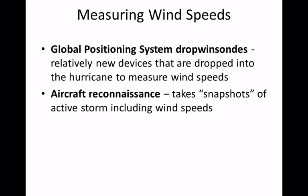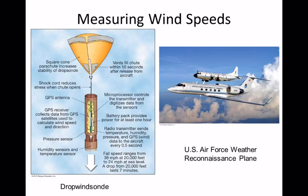Reconnaissance aircraft measure hurricane winds by dropping devices called dropwindsondes, which are the opposite of weather balloons. Instead of going up and reading atmospheric data, these are dropped down through the storm with a small parachute, transmitting data as they fall. Since they drop into the ocean, they're almost certainly not recoverable.